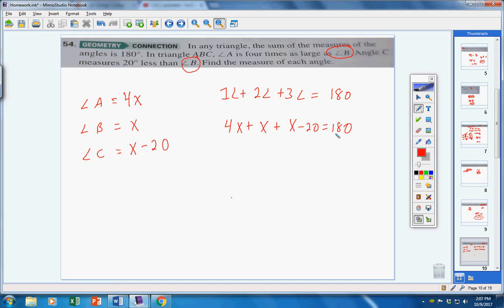Let's solve the equation. Simplify both sides. There's a 1 here and a 1 here. So, we get 6X, negative 20, equals 180. Add 20 on both sides. We get 200. And we will get 33.3 repeating. So, angle A is 4X. 4 times 33.3 will give you 133.3. Angle B is X, which is just 33.3 degrees. And then C is X minus 20. So, put 33.3 in for X, subtract, and you will get 13.3 degrees.